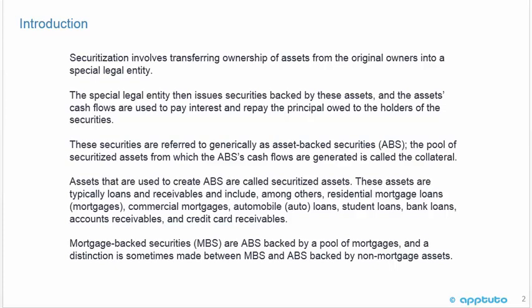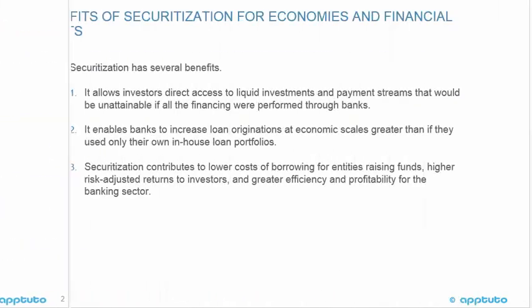Assets that are used to create asset-backed securities are called securitized assets. These assets are typically loans and receivables and include, among others, residential mortgage loans, commercial mortgages, automobile loans, student loans, bank loans, accounts receivable, and credit card receivables. Mortgage-backed securities, or MBS, are asset-backed securities backed by a pool of mortgages, and a distinction is sometimes made between MBS and asset-backed securities that are backed by non-mortgage assets.